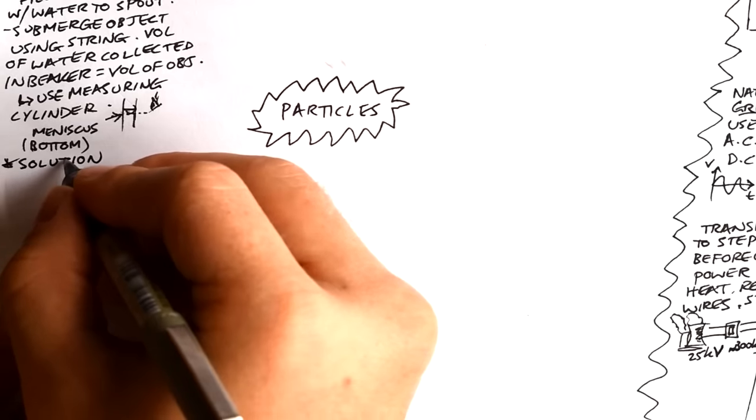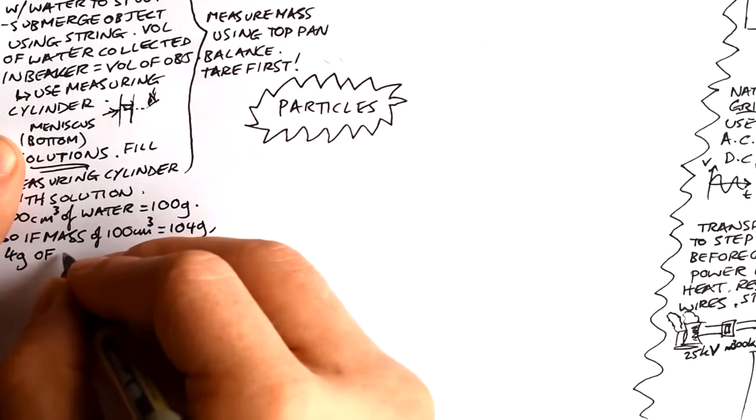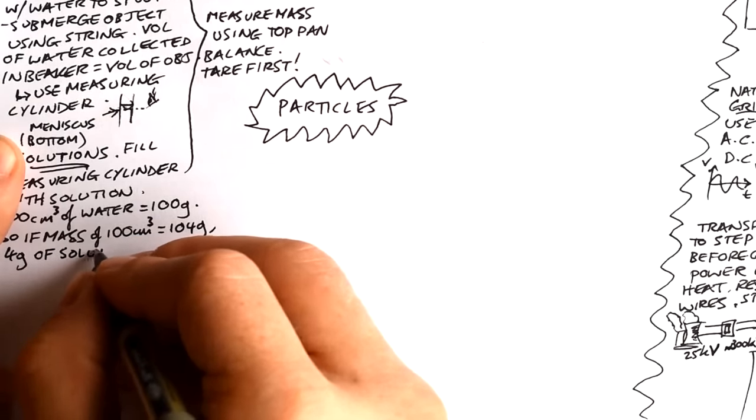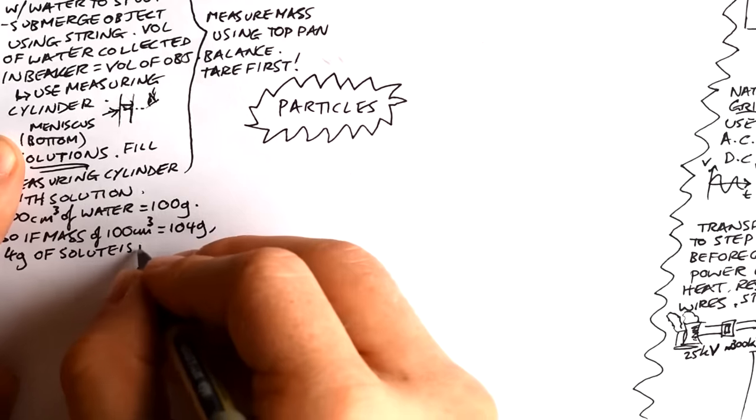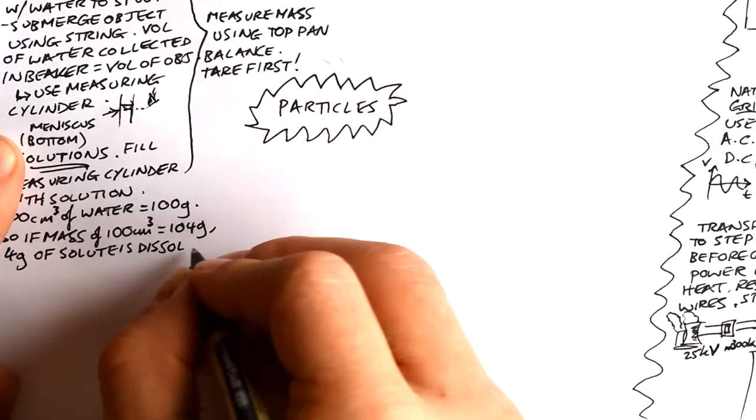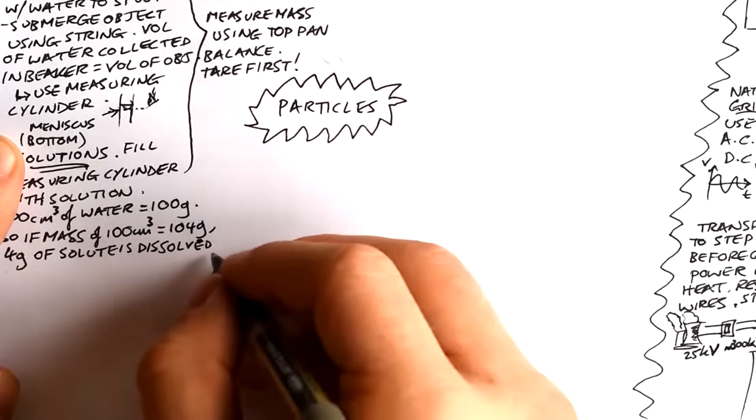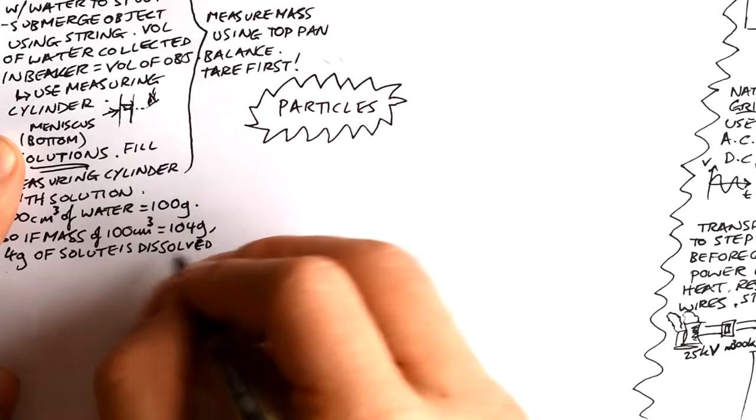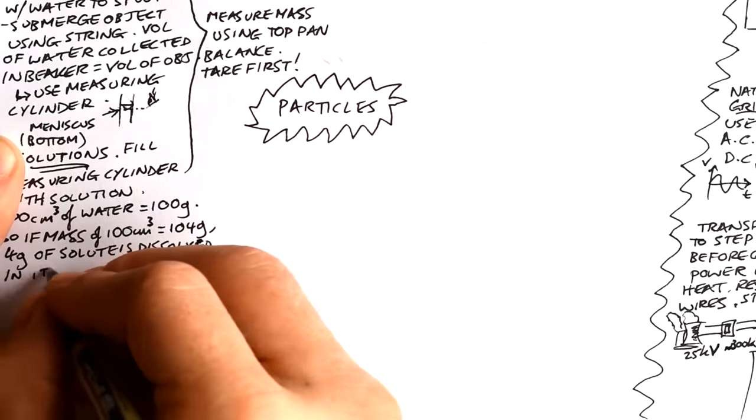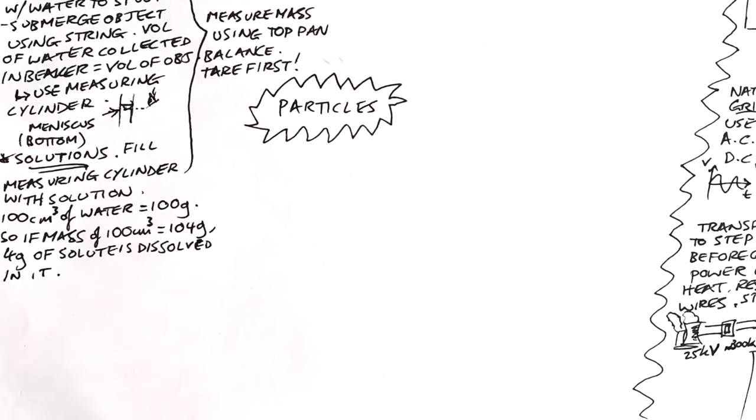We can actually calculate the concentration of solutions as well. 100 centimeters cubes of water should have a mass of 100 grams. However, if the mass is bigger than this, then that means that it has something dissolved in it. So let's say that the mass ends up being 104 grams, that means we've got four grams of a solute, like salt or sugar, dissolved in it. Of course, we can measure the mass of all of these things with the regular objects, the irregular objects and the solution by using a top pan balance. Don't forget to tare first. For solutions, you must put the measuring cylinder on the balance first, tare it or zero it and then put the solution in.